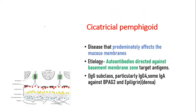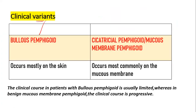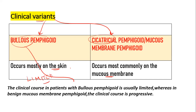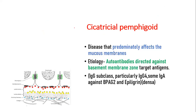There are two clinical variants: bullous pemphigoid and cicatricial pemphigoid. Bullous pemphigoid mostly occurs on the skin and has a limited course, whereas cicatricial pemphigoid mostly occurs on the mucous membranes and is progressive in nature.